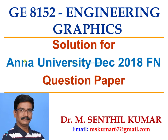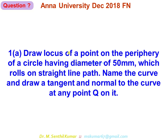Welcome to my channel on engineering graphics. In this video we'll see the solution for the Anna University question paper, the December 2018 forenoon paper with code GE8152. The first question, 1a: draw the locus of a point on the periphery of a circle having diameter of 50mm which rolls on a straight line path. Name the curve and draw a tangent and normal to the curve at any point Q. This is a cycloid problem, and I'll show you the final answer directly.